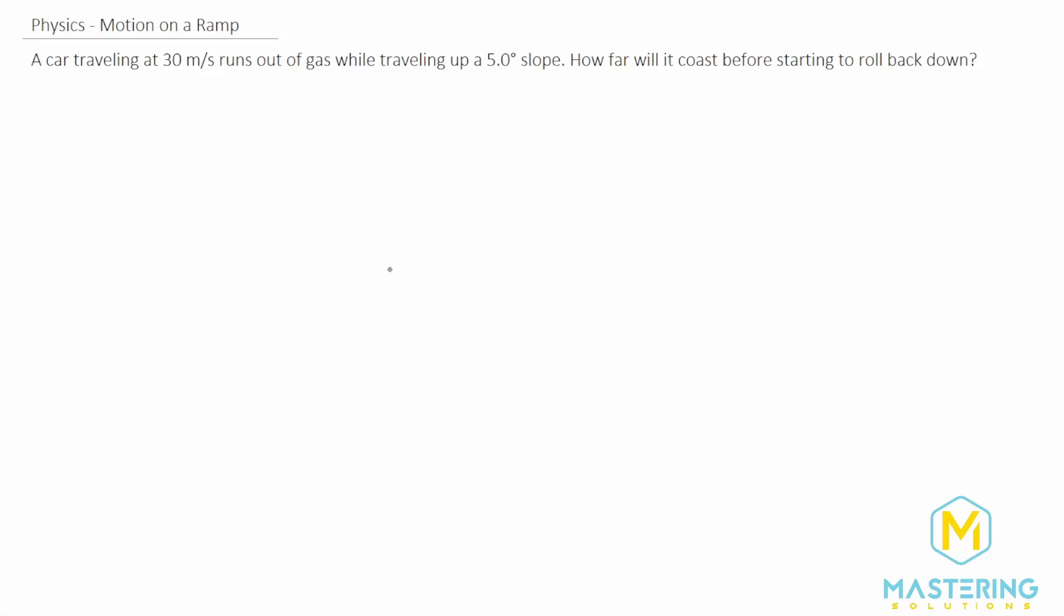Welcome to Mastering Solutions. In this motion on a ramp problem, they tell us that a car traveling at 30 meters per second runs out of gas while traveling up a five-degree slope. We need to find out how far it'll coast before rolling back down.